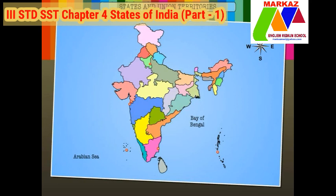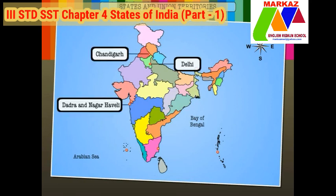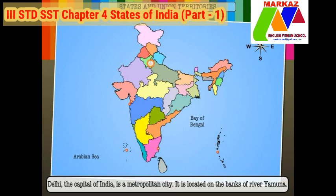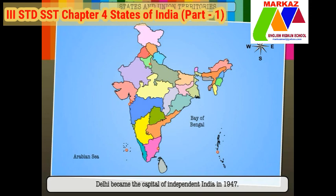The seven union territories are Delhi, Chandigarh, Dadra and Nagar Haveli, Daman and Diu, Puducherry, the Andaman and Nicobar Islands, and Lakshadweep. Delhi, the capital of India, is a metropolitan city located on the banks of River Yamuna. It is also known as the National Capital Territory, NCT, of Delhi. Delhi became the capital of independent India in 1947.